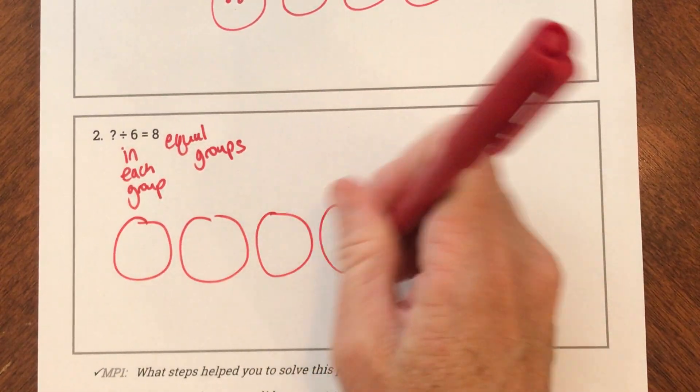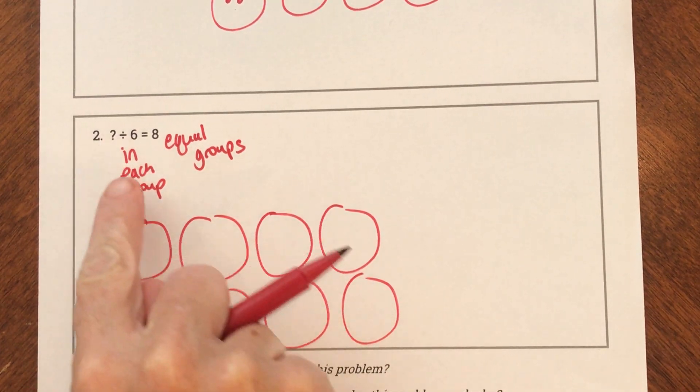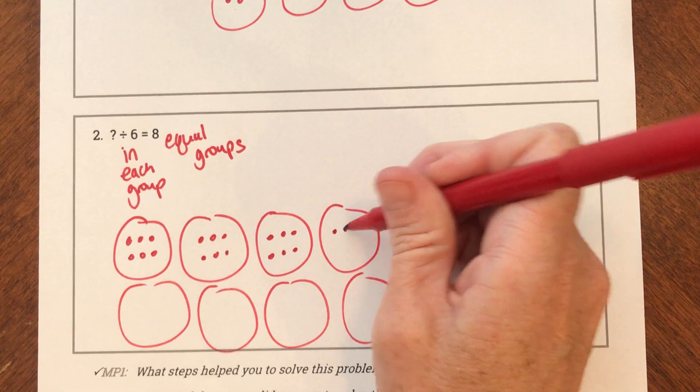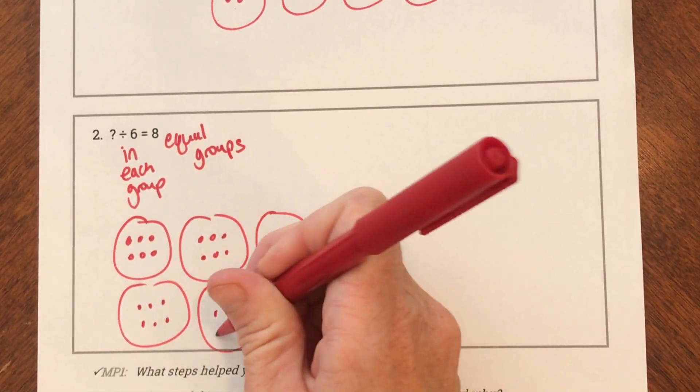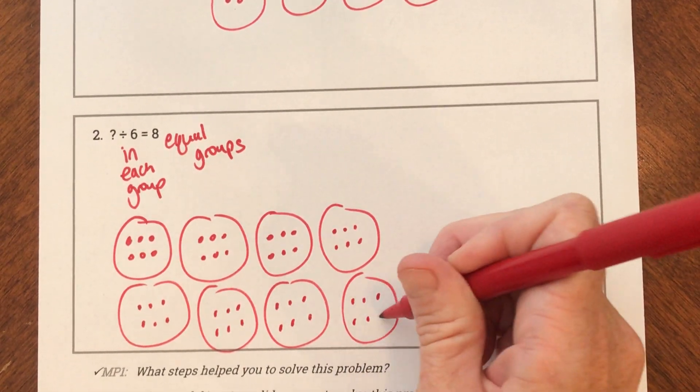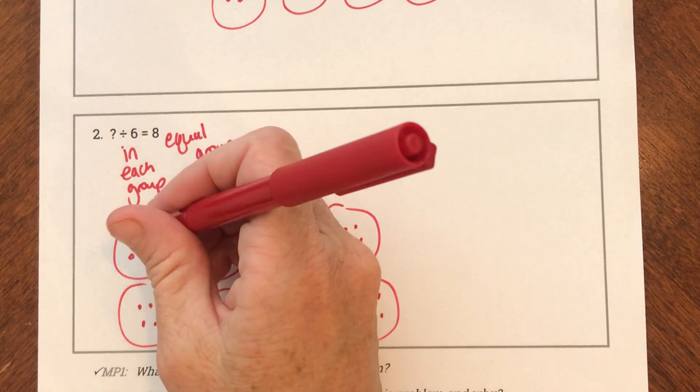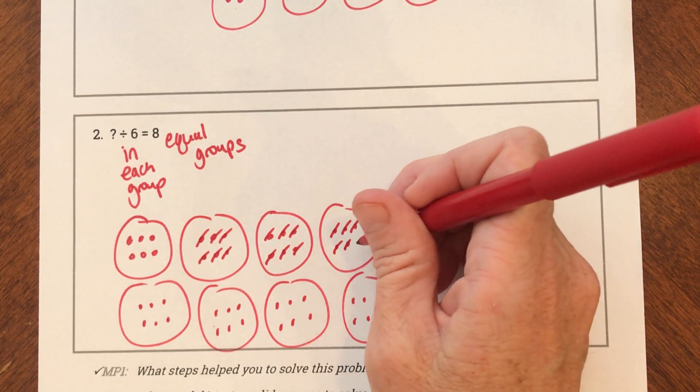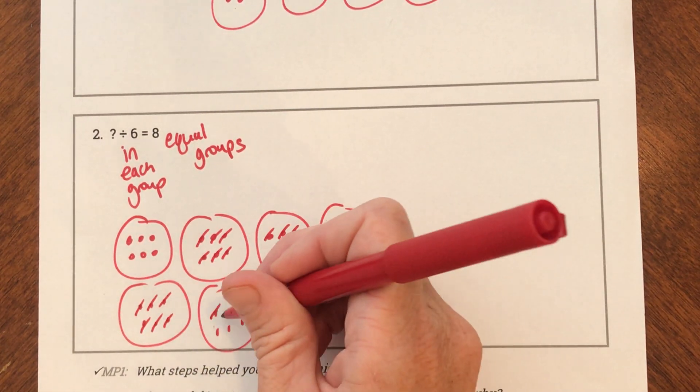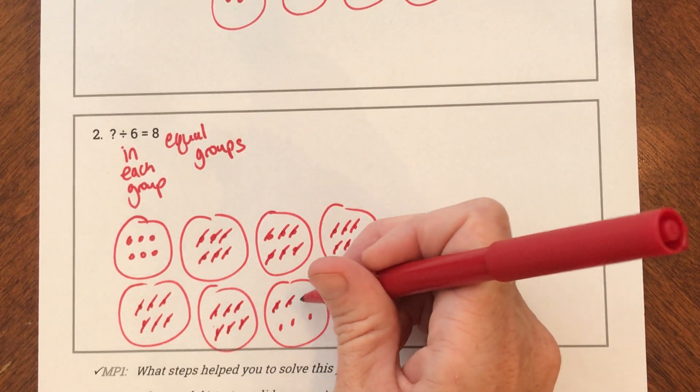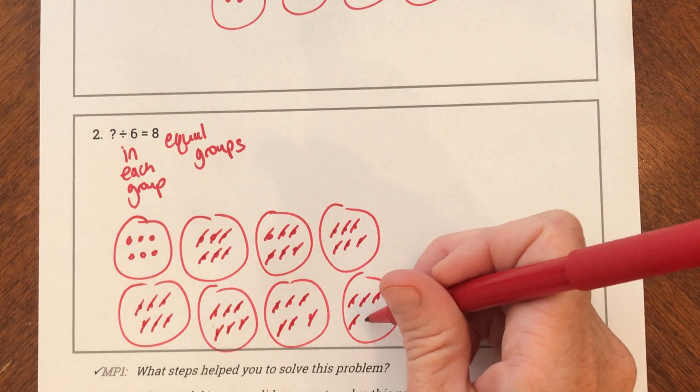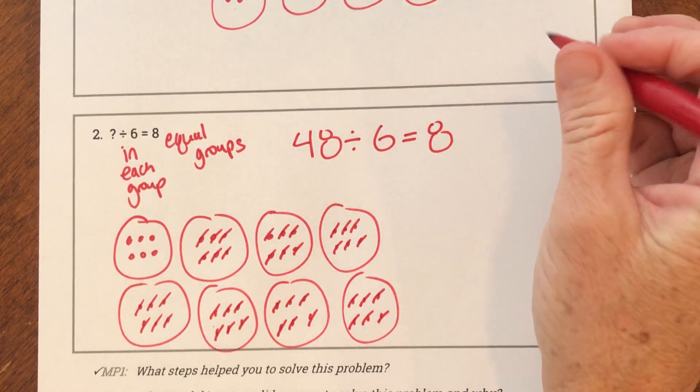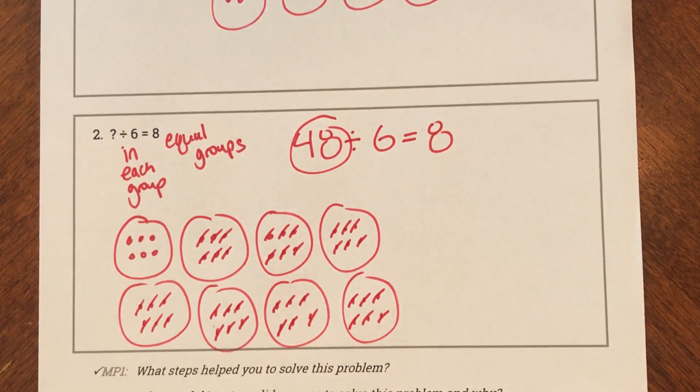I could say I don't know how many, but I divided it into six in each group and I have eight equal groups. So how many would it take to do that? If I had eight equal groups and I put six in each group, how many would it have taken to do that? What does my dividend have to be? Let's go back and count that. [Counting to 48]. I would have needed 48 to divide and put six in each group and have eight equal groups. So my unknown had to be 48.